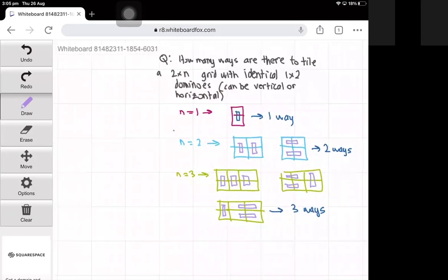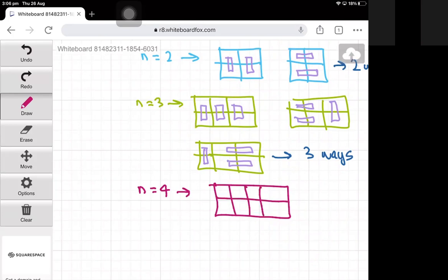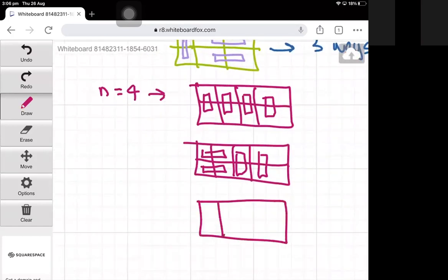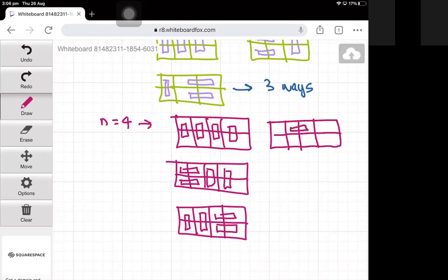And the final small example we'll do is n equals 4. The ways of tiling it: one way is doing four verticals. We can also do two horizontals and two verticals, we can do two verticals and two horizontals, we have two horizontals here and two verticals here, and the final way is all four horizontal. So there's five different ways.